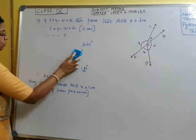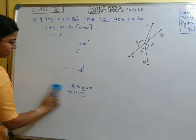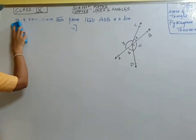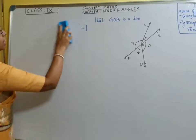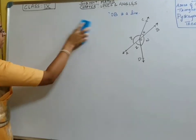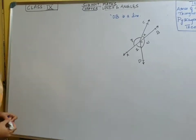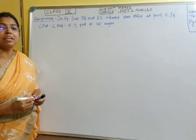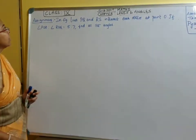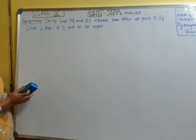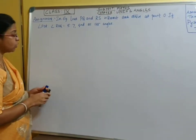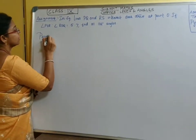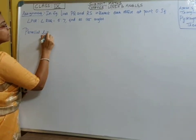Now we will go to parallel lines and transversal. Before that, I will give you an assignment — please copy that. This assignment is for the previous concept, linear pair axiom. Please complete this assignment, and then we will move on to parallel lines and transversal.